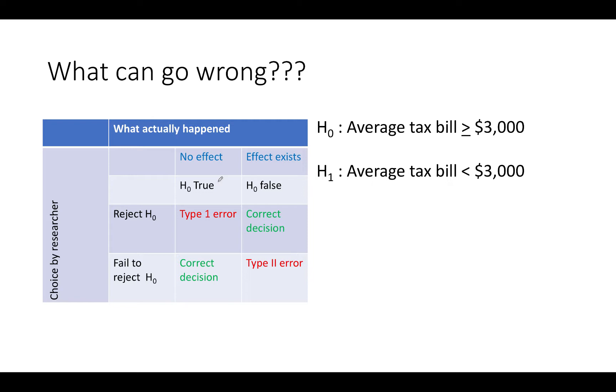Looking at the population value, let's assume that the null hypothesis is true. In this case, the average tax bill is greater than $3,000. But based on the sample, the researcher chose to reject the null hypothesis and support the alternative, that the average tax bill was less than $3,000. This researcher has made a Type 1 error or has rejected the null hypothesis when it is in fact true.